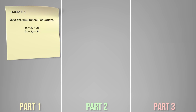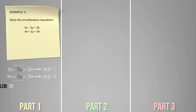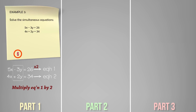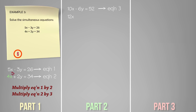Let's take a look at a third example: solve 5x minus 3y equals 26 and 4x plus 2y equals 34. Looking at the x terms, the lowest common multiple of 5 and 4 is 20. Looking at the y terms, the lowest common multiple of 3 and 2 is 6. Since 6 is smaller, let's eliminate the y terms. Multiplying equation 1 by 2 gives 10x minus 6y equals 52 (equation 3), and multiplying equation 2 by 3 gives 12x plus 6y equals 102 (equation 4).